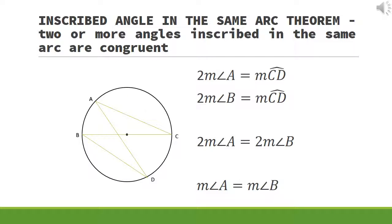Next, we have the inscribed angle in the same arc theorem. Two or more angles inscribed in the same arc are congruent. In the example below, twice the measure of angle A is equal to the measure of arc CD, and twice the measure of angle B is equal to the measure of arc CD. Therefore, twice the measure of angle A is equal to twice the measure of angle B, and we can conclude that the measure of angle A is equal to the measure of angle B.